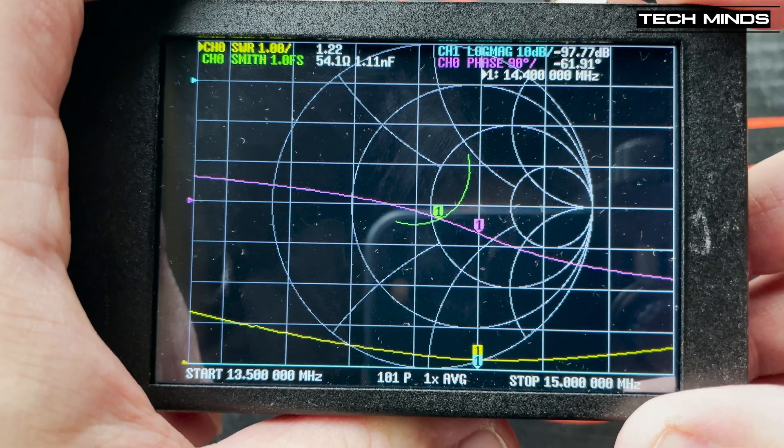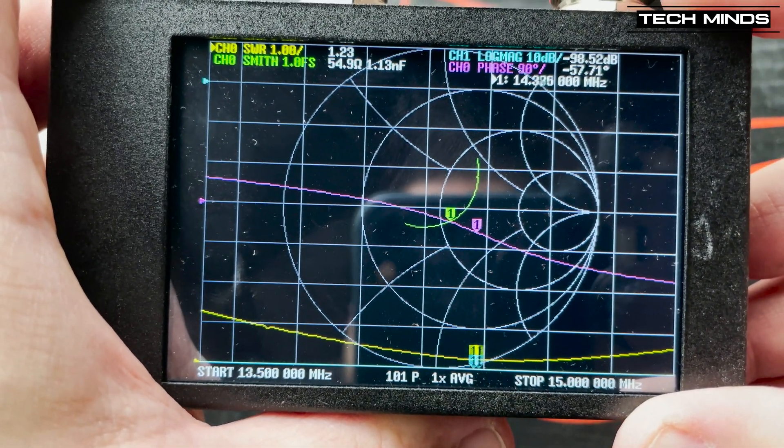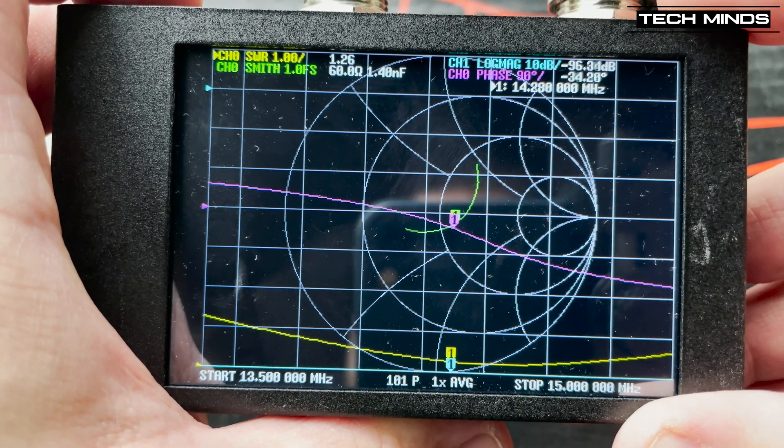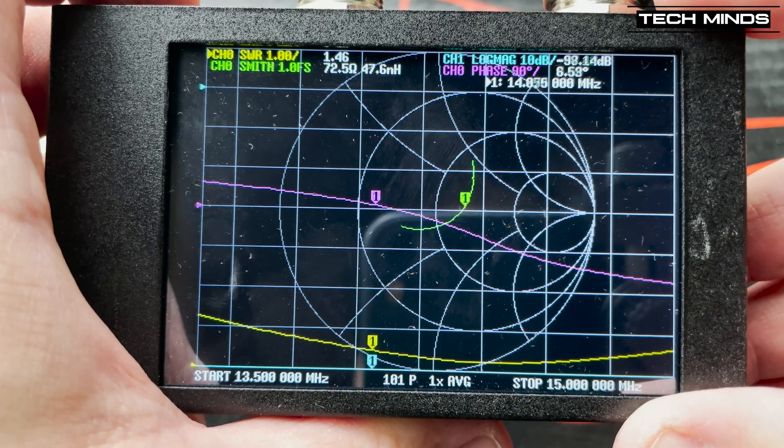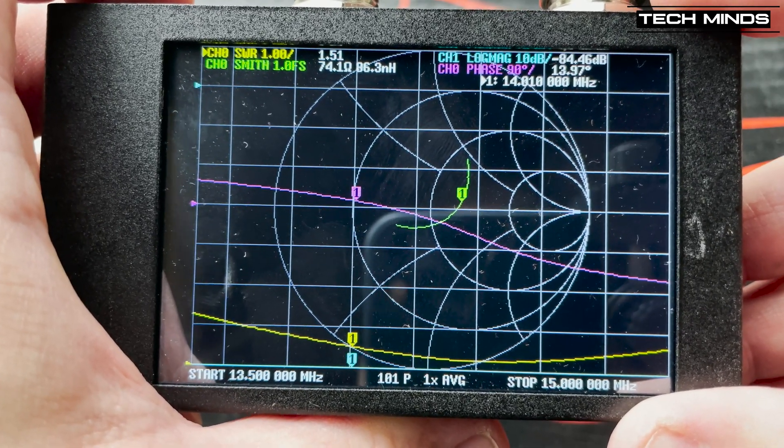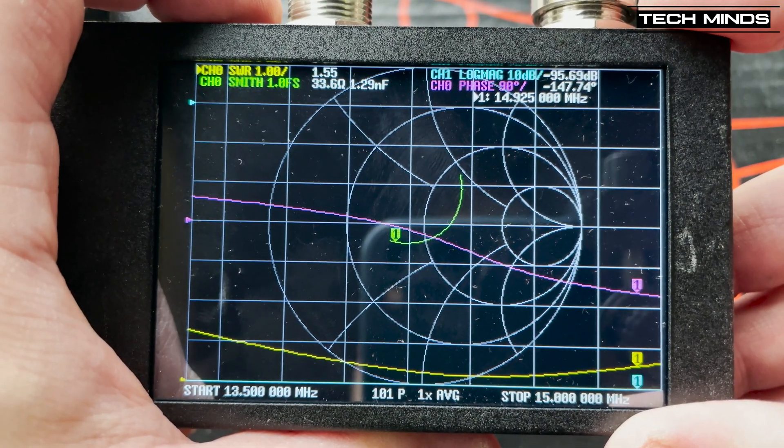At 14.055, the SWR was reading at 1.46 and at 14.355, it was reading as 1.23. Looking at this plot, the antenna did look a little short as the dip was towards the top of the band. Notice how the impedance gets closer to 50 ohm as we reach the lowest SWR point.